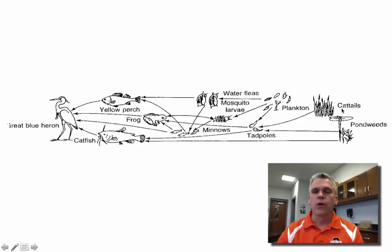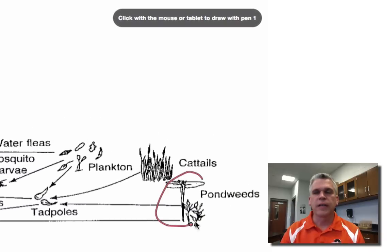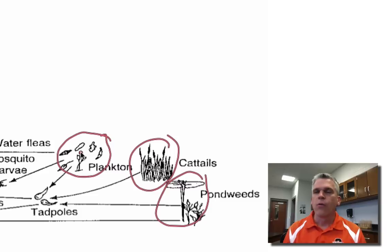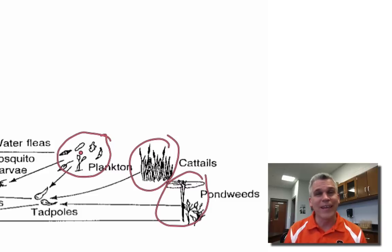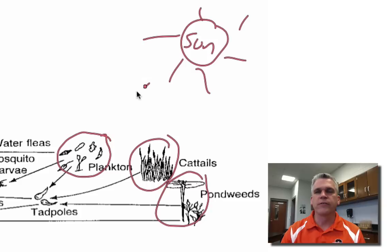But if you notice over here, things like pond weeds and cattails and the plankton — they don't have any arrows going towards them. So where are they getting their energy? That's right. They're getting their energy from the sun. So the sun is providing energy and that is how they get their energy.